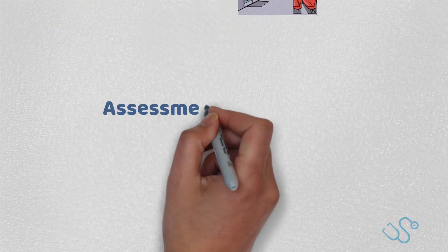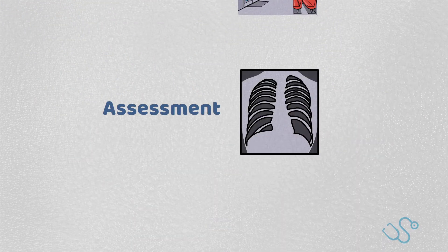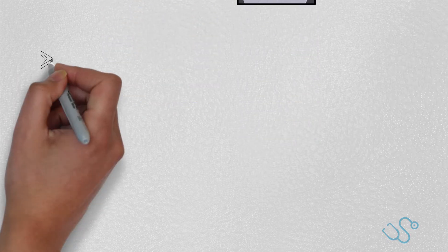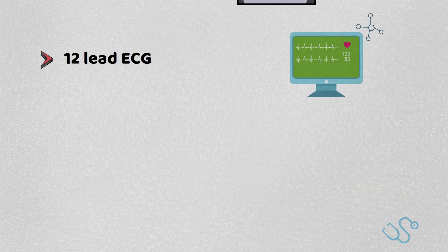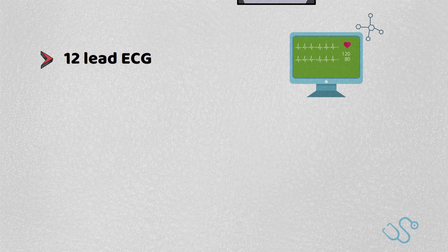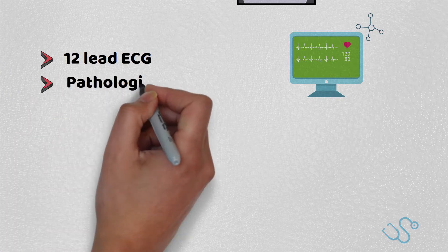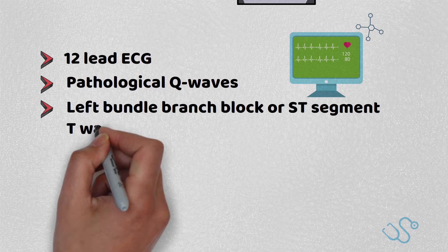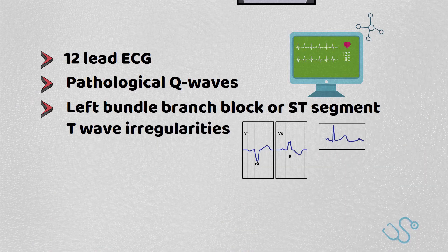If a clinical assessment and history of stable angina cannot fully determine a diagnosis, NICE recommend a resting 12-lead ECG that may indicate ischemia or previous infarcts with changes including pathological Q waves, left bundle branch block, or ST segment and T wave irregularities.